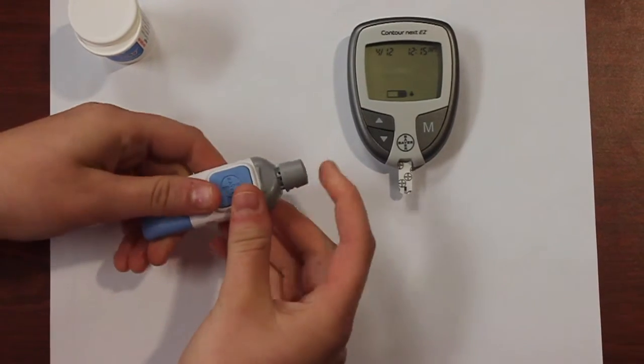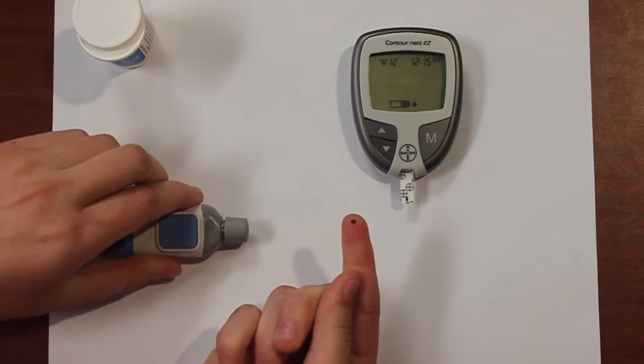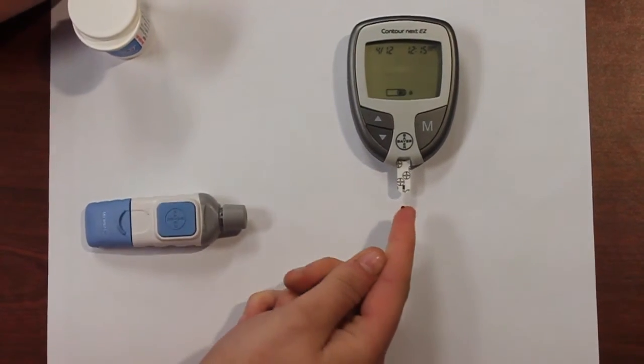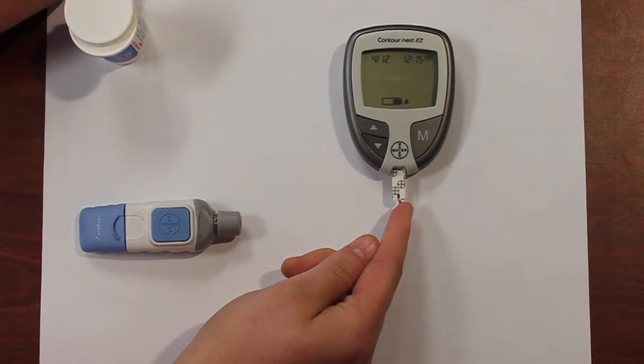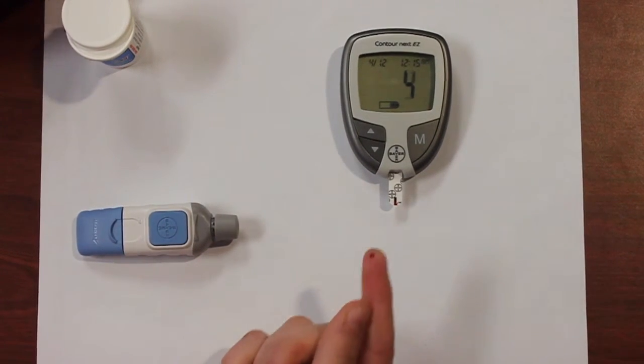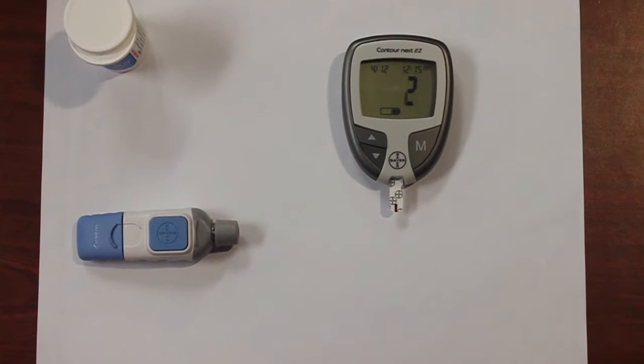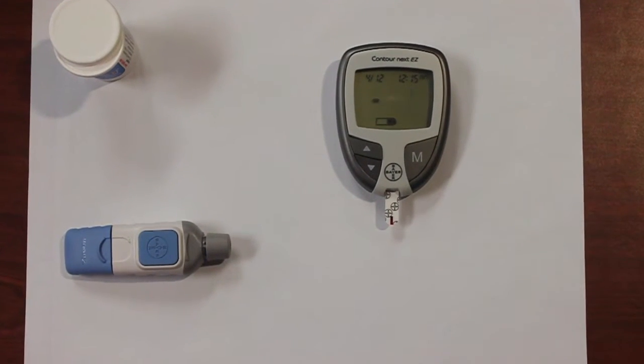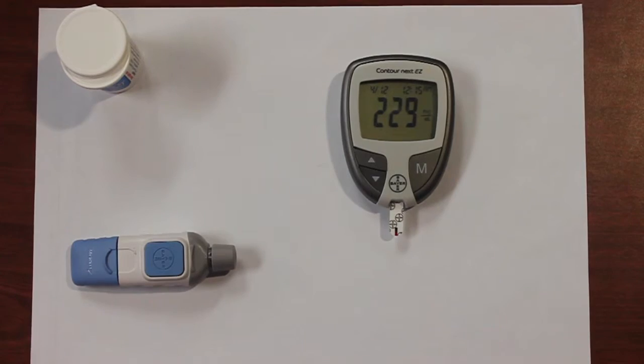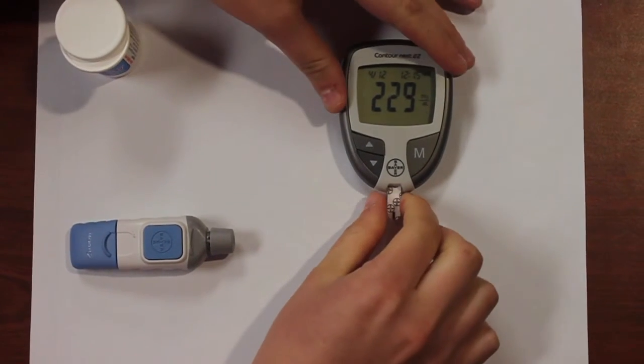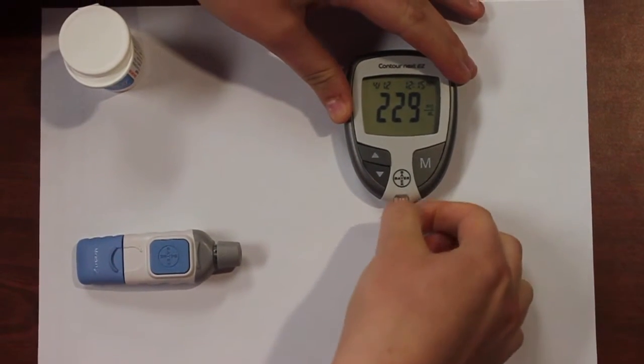Next, pull the trigger on the lancing device, press the button, and squeeze the blood onto the test strip. The test strip will pull the blood into the device, and the device will count down for five seconds before displaying the blood glucose. I'm also a type 1 diabetic, so obviously that blood sugar is a little high.